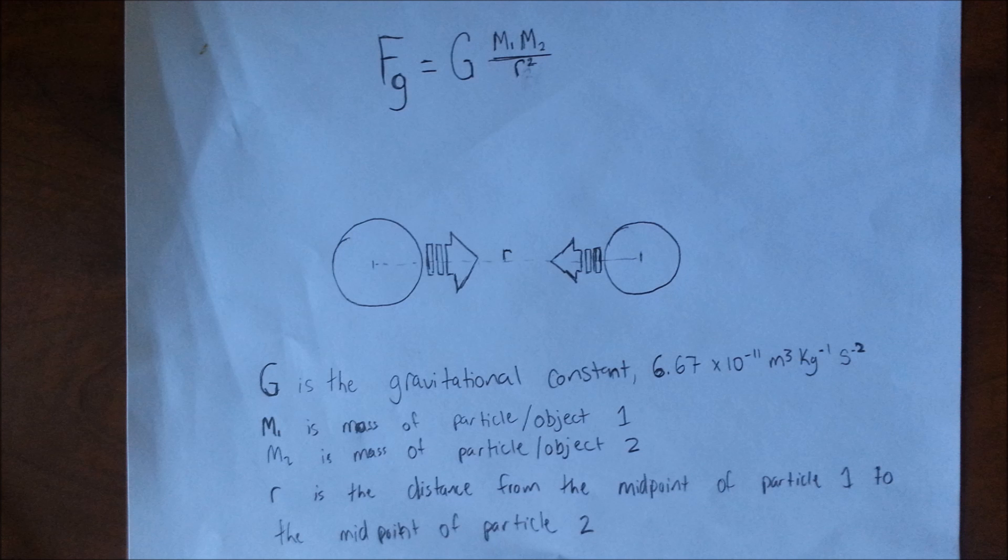Force of gravity is what causes this collapse and is governed by the formula F sub G equals capital G times M1 times M2 divided by R square. Where F sub G is the force of gravity.